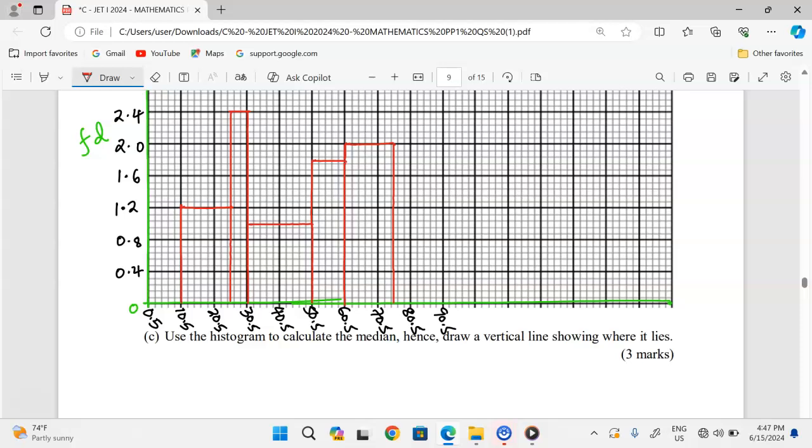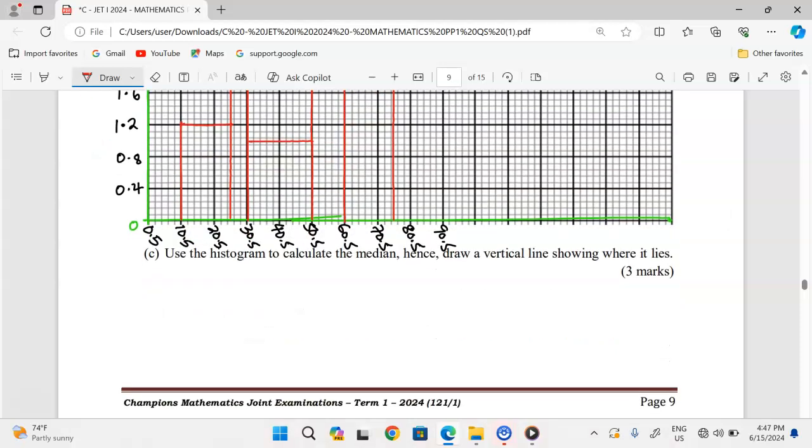With 98 students, we divide by 2 and get 49, so we need the score for the 49th student. What you should know is that the area of each bar in this graph represents the number of students there.